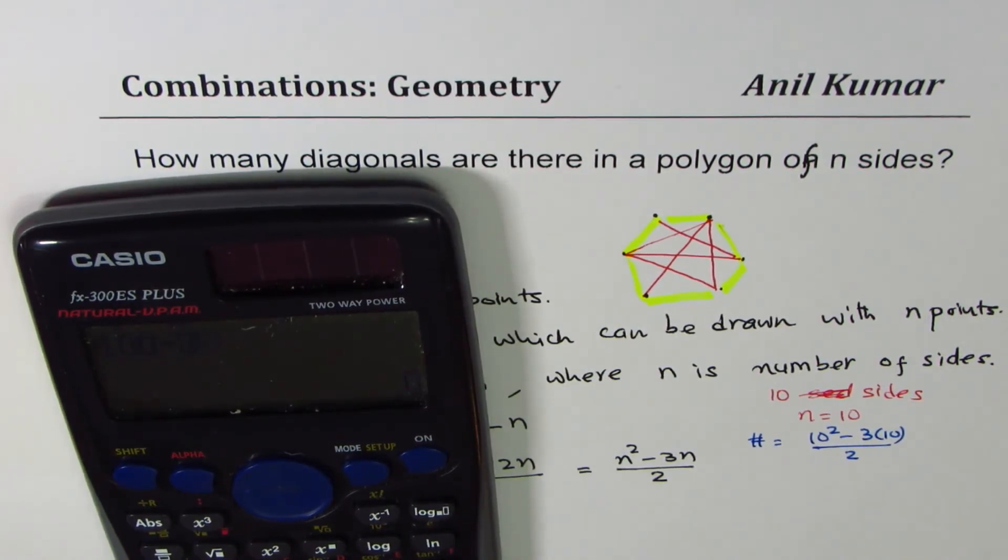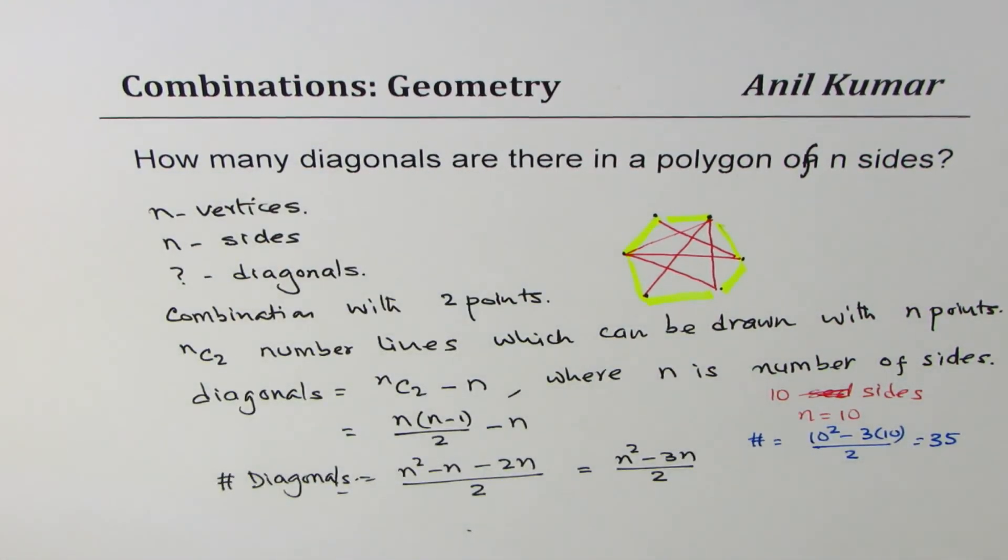So 100 minus 30 divided by 2, which is 35. So we expect, rather we show, that there will be 35 diagonals for a 10-sided figure.